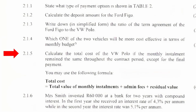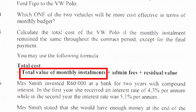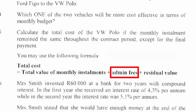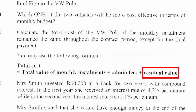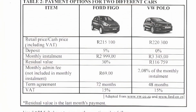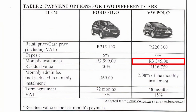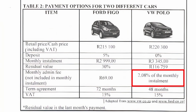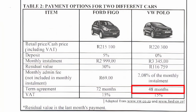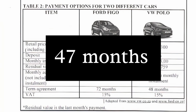Question 2.1.5: Calculate the total cost of the VW Polo if the monthly installment remains the same throughout the contract period except for the final payment. You may use the provided formula. The plan is to calculate the total value of the monthly installments, the total admin fees, and add them to the residual value. From the table, the installment is R3,345 per month, the admin fee is 2.08% of the monthly installment, the residual value is R116,759, and the term is 48 months. Since the last payment is the residual value, the installments and admin fees are calculated over 47 months.